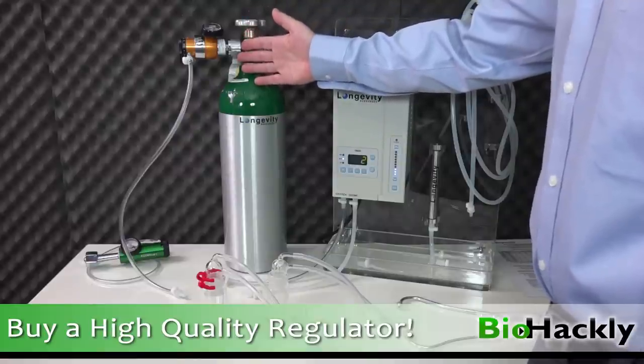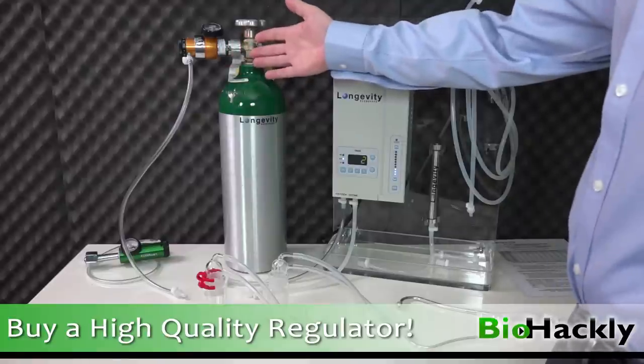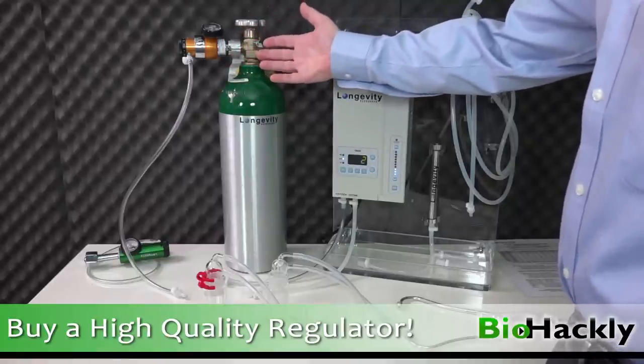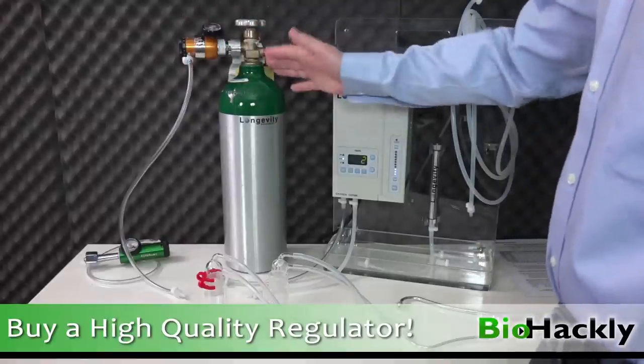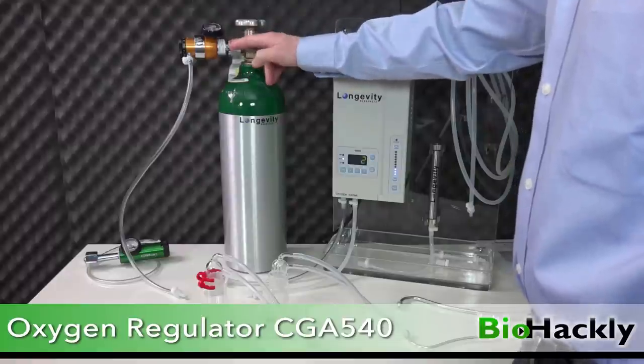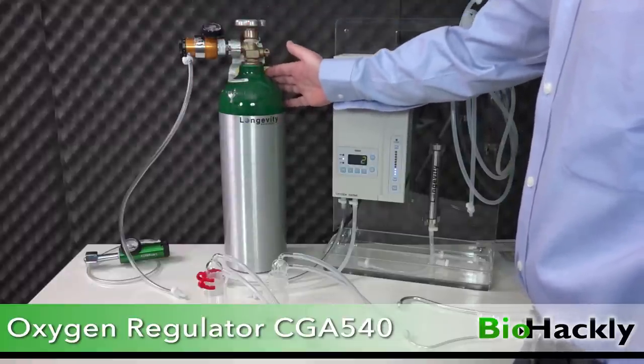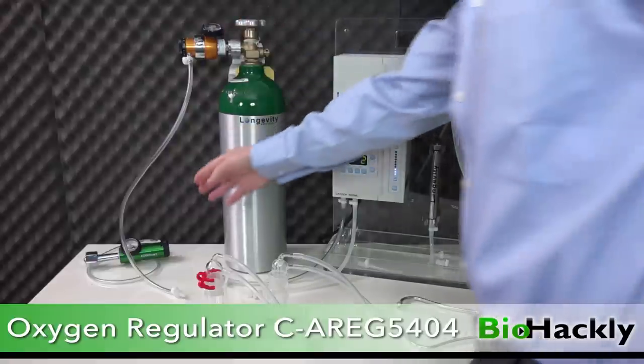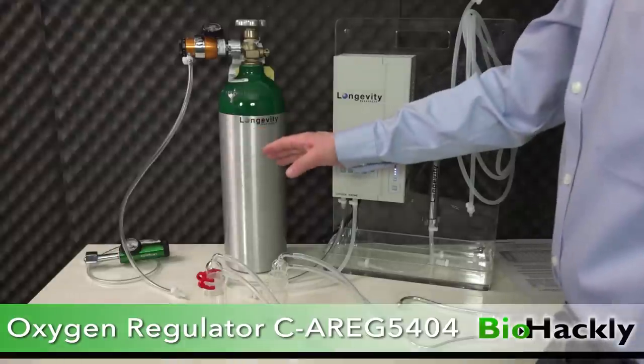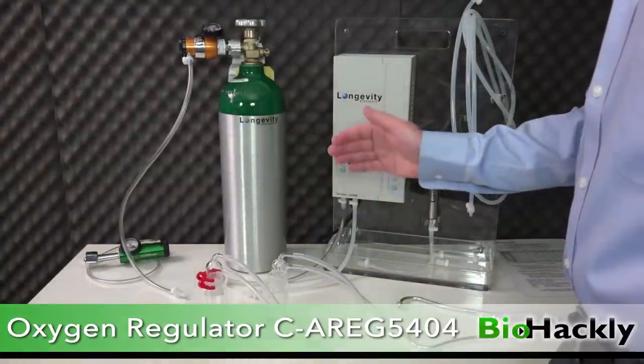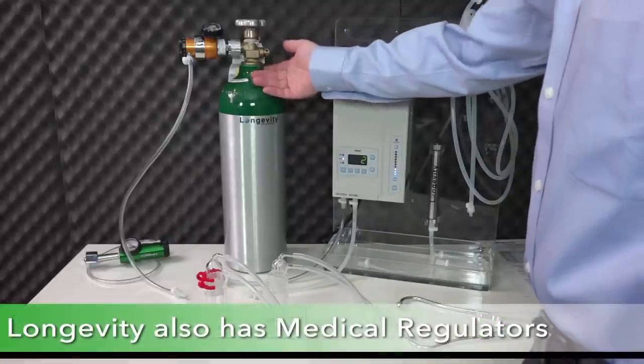This is one of the things I always say: make sure you get yourself a better oxygen regulator. If you've got a cheap regulator in the $50 to $150 range, it will probably give you an inaccurate reading and might even leak at some point. It's not worth it. Get a better oxygen regulator—I'll put the model number on the screen. It doesn't matter what oxygen tank you have; this will work on it.